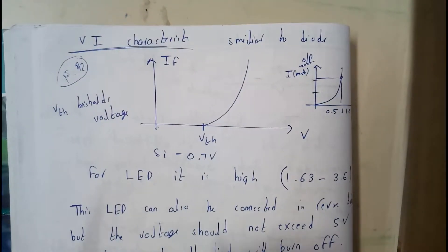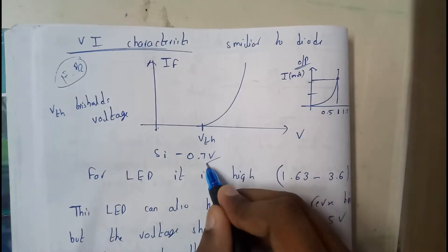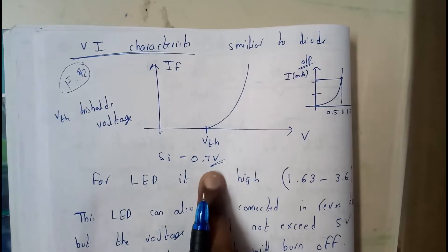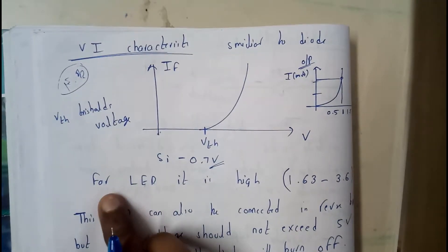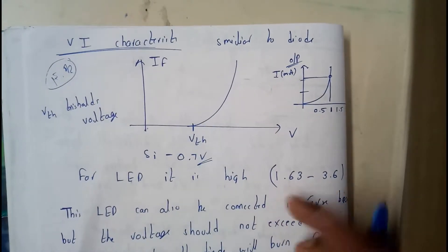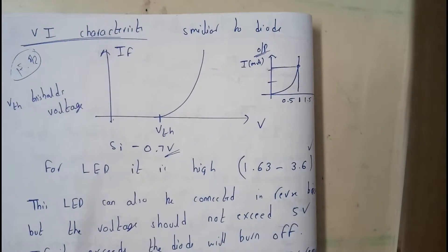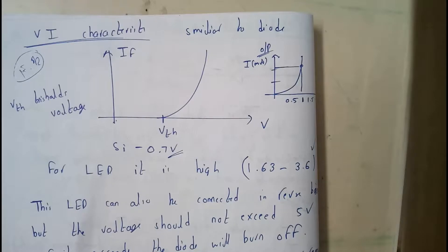The only difference is that for silicon it is 0.7, the breakdown voltage or cutting voltage is 0.7, but for an LED it is really high. It is almost 1.63 to 3.6 volts.